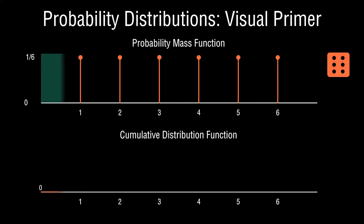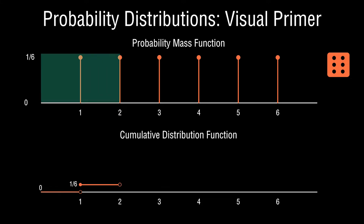We run a sliding window across the probability mass function, simply adding up the probabilities associated with each outcome as the window passes by. Up until the outcome of one, the cumulative probability should be zero — it's impossible to roll a die and have the outcome be less than one. When we hit value one, the cumulative distribution function should be one-sixth. Up until the outcome of two, all outcomes have zero probability, so the cumulative probability remains at one-sixth.